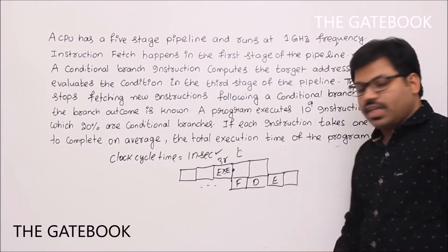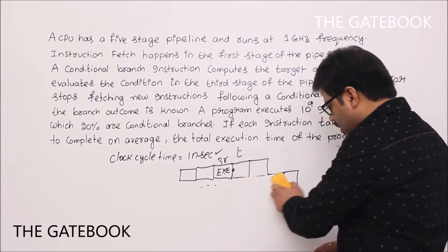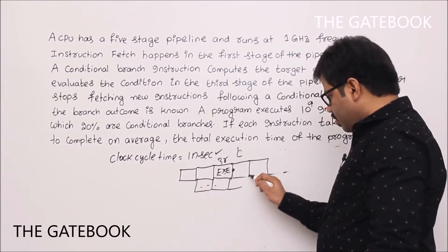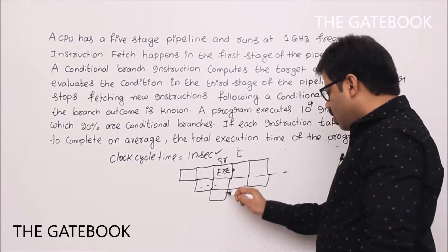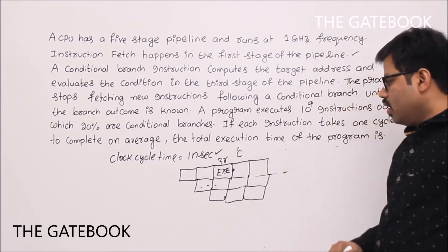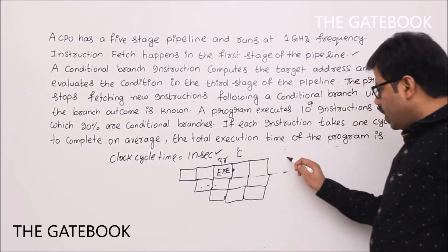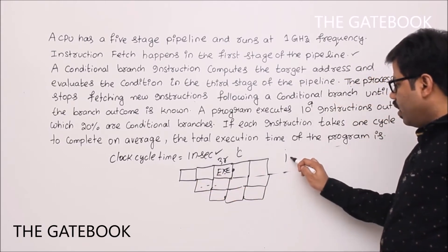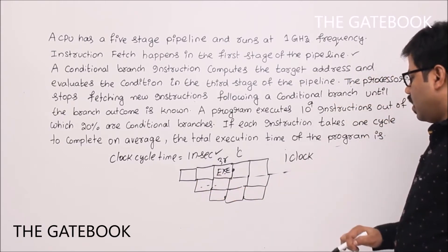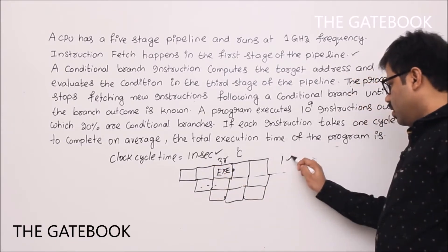If this is not a conditional instruction, we would have overlapping in the pipeline. When you have overlapping, each instruction is effectively taking only one clock cycle time — or one stage delay. We know that already.